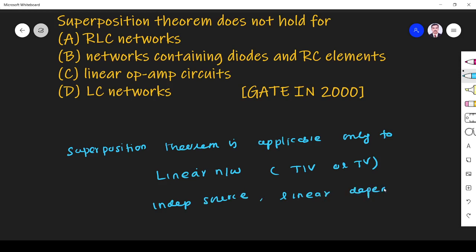If the network has independent sources or linear dependent sources, we can apply superposition theorem. Also, if the circuit has linear passive elements.